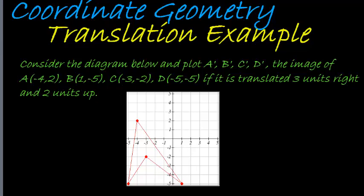Let's quickly write in the correct coordinates. We have A is (-4, 2), that's this one, there's A. B is (1, -5), that's B. C is (-3, 2), so that's this one, this is C.